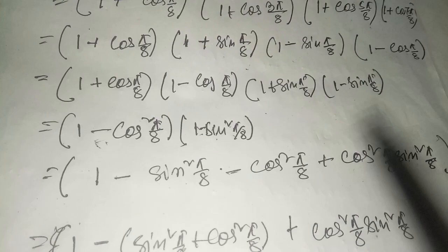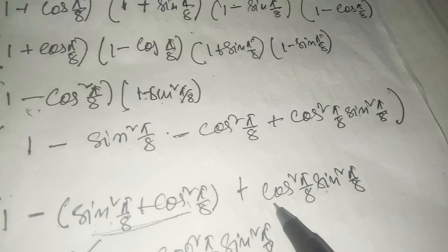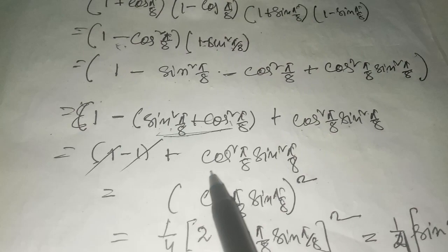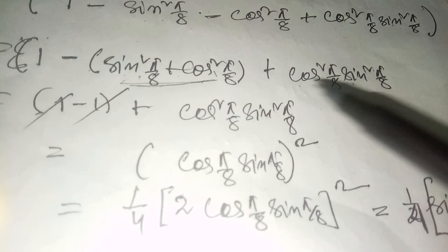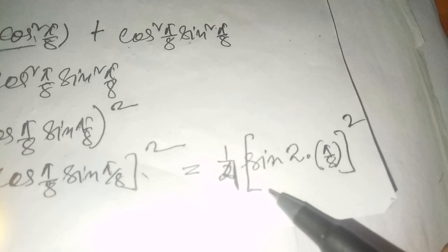We know that cos²x + sin²x = 1, so 1 − cos²(π/8) = sin²(π/8) and 1 − sin²(π/8) = cos²(π/8). This gives sin²(π/8) × cos²(π/8). We can write this as (1/4)(2 sin π/8 cos π/8)², which equals (1/4)(sin 2π/8)² = (1/4) sin²(π/4).